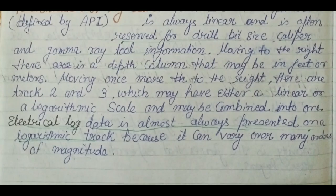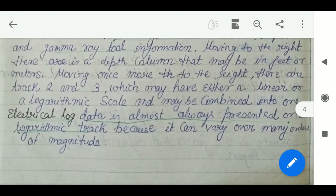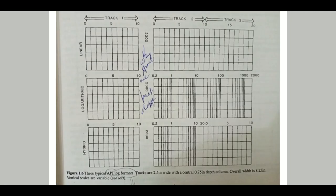Let me show you how this figure looks. You can see Track 1 is linear, and there is a logarithmic track as well. These are the typical API format. What is API? Give me your answer in the comments — I will discuss it. You can see how these logs are represented: Track 1, Track 2, Track 3.